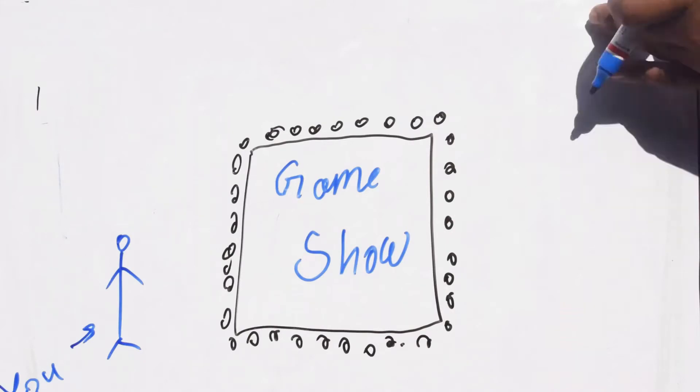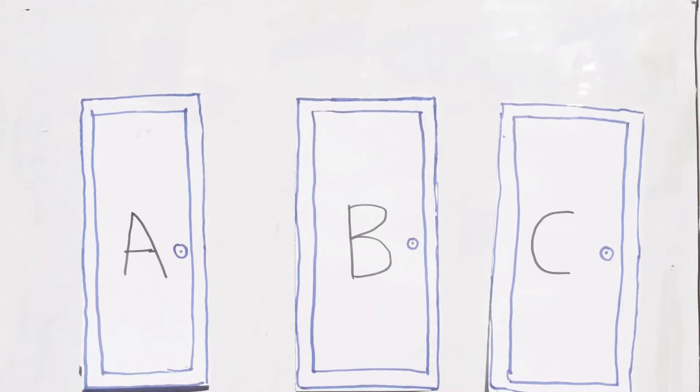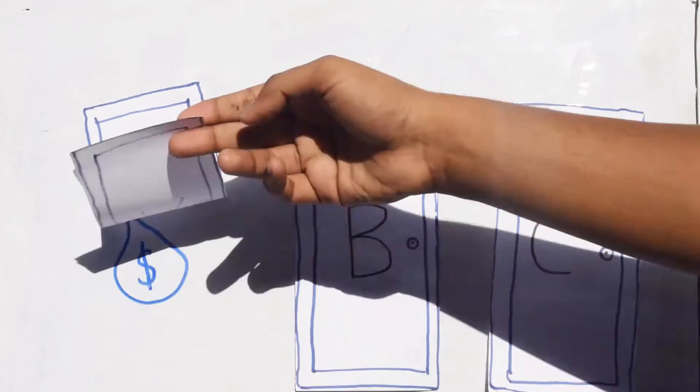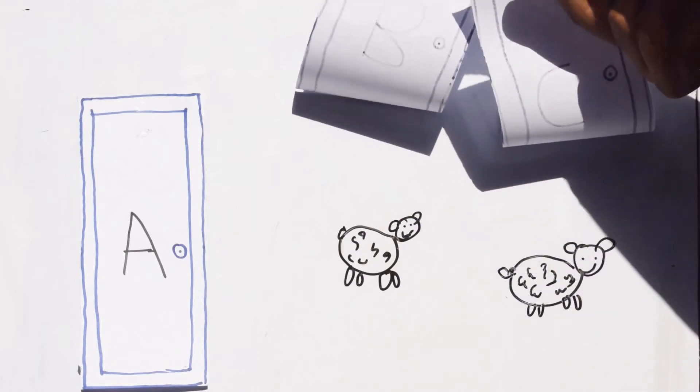You are invited to a game show called Door to the Millionaire. When you get there, the host presents you with three doors and tells you that behind one of these doors is a million dollars and behind the other two is a goat.